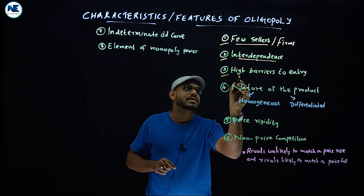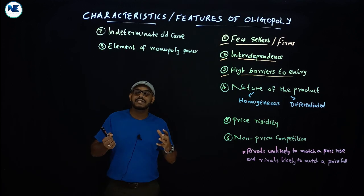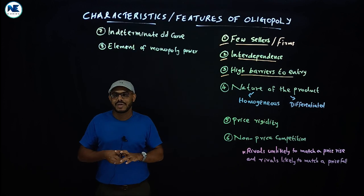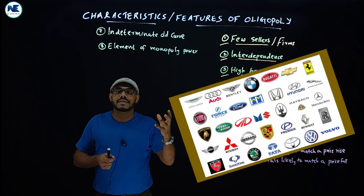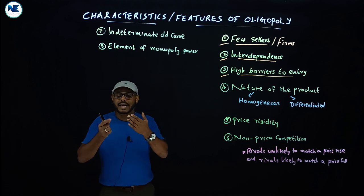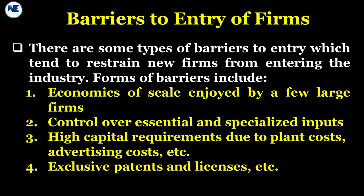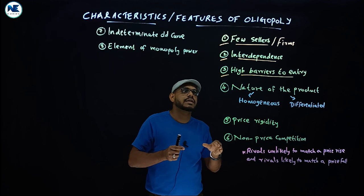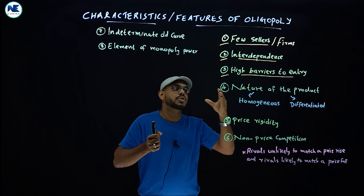The third feature is high barriers to entry — it is not easy for a new firm to enter the market. For example, in the automobile or car industry, huge investment is required. Similarly, economies of scale and other favorable factors are enjoyed by existing firms. That is why under oligopoly it is argued that there exists a high barrier or restriction to entry.